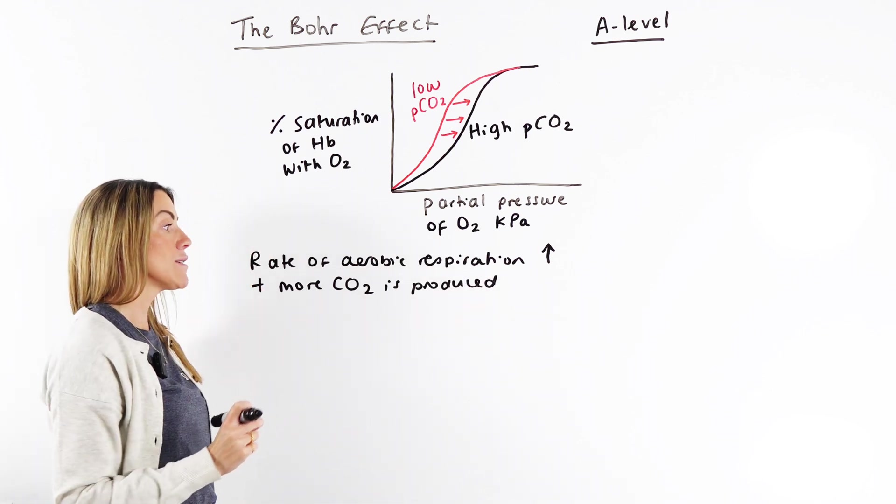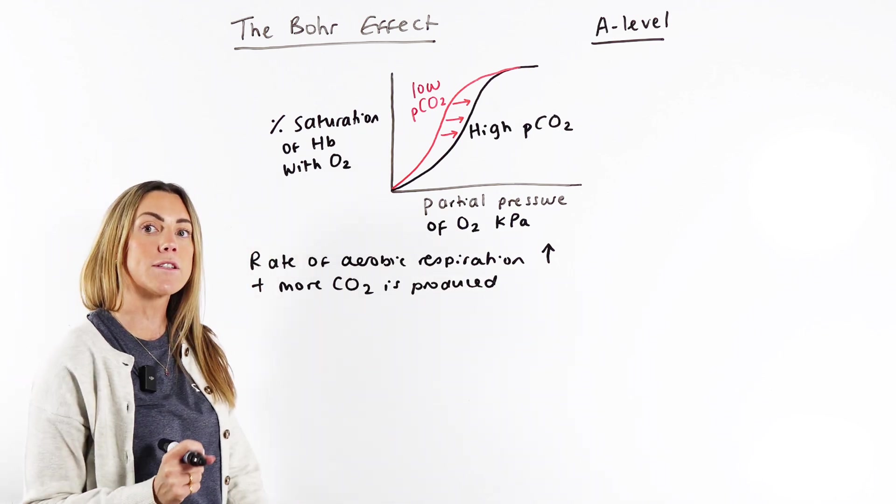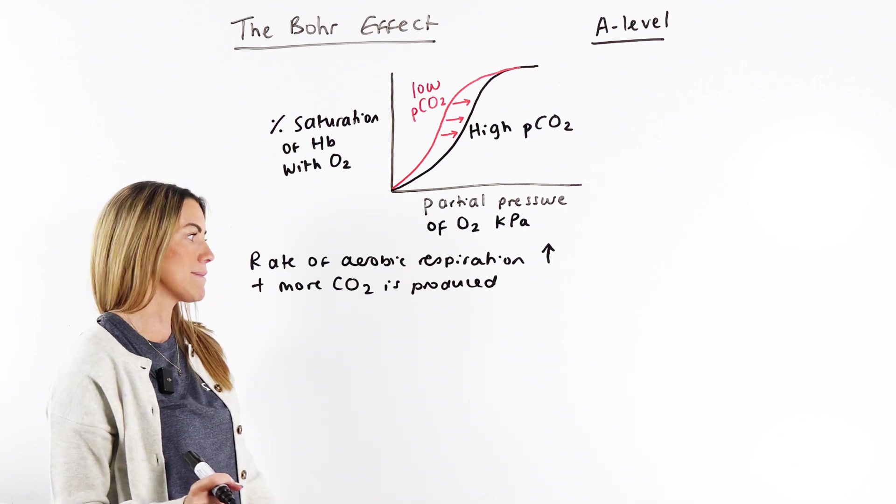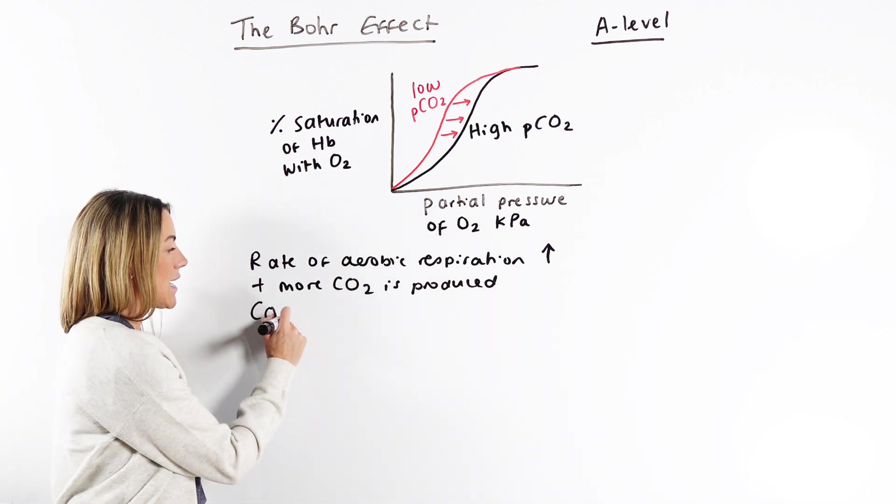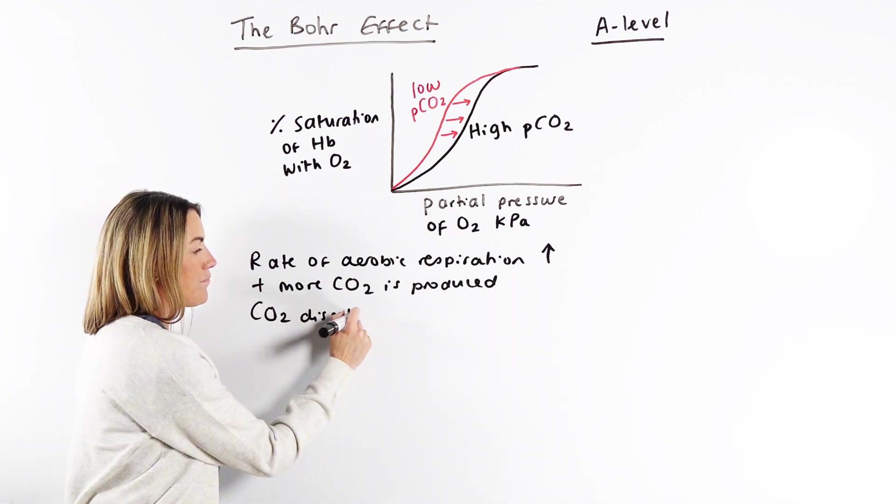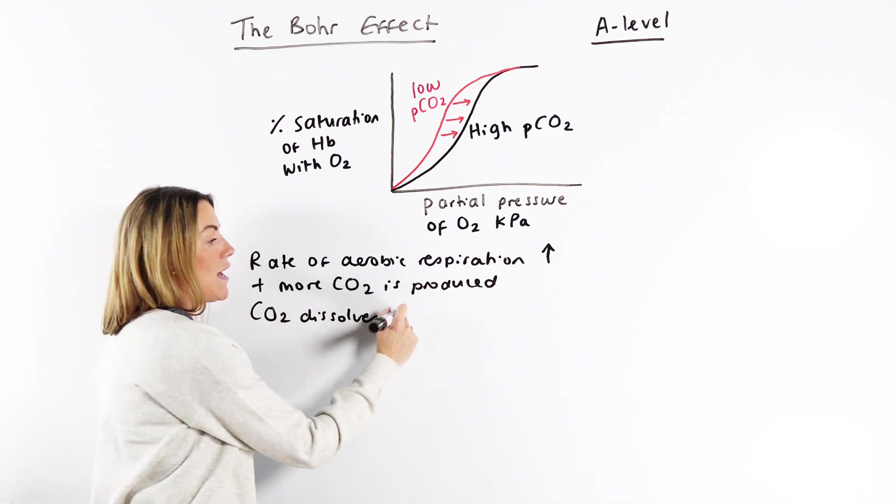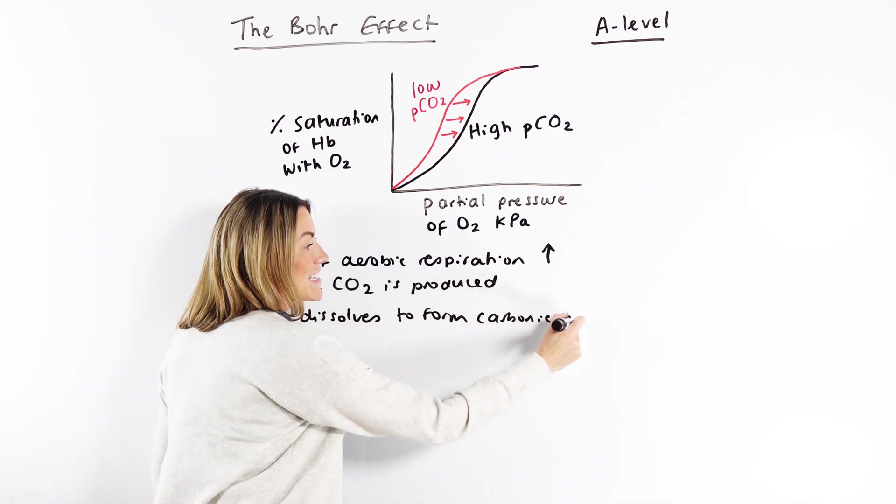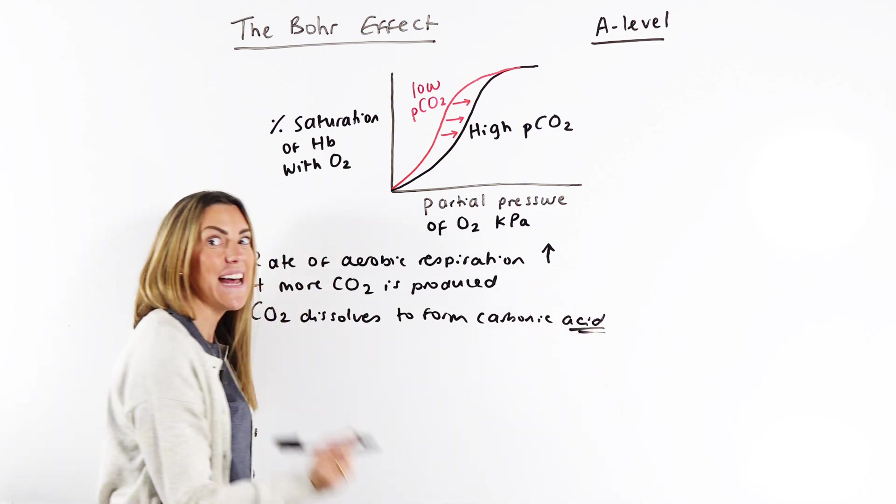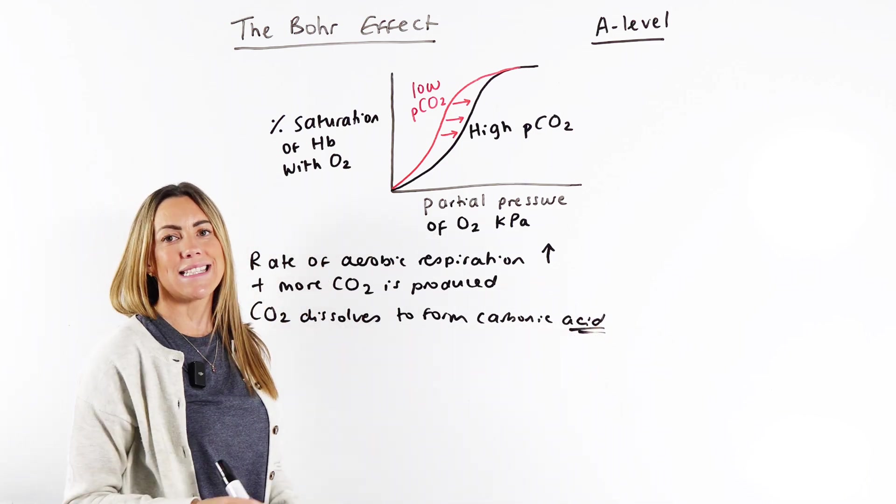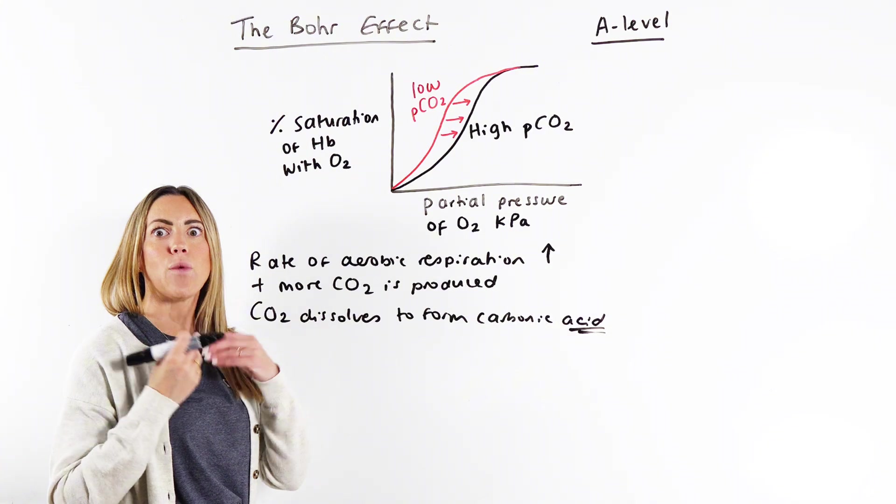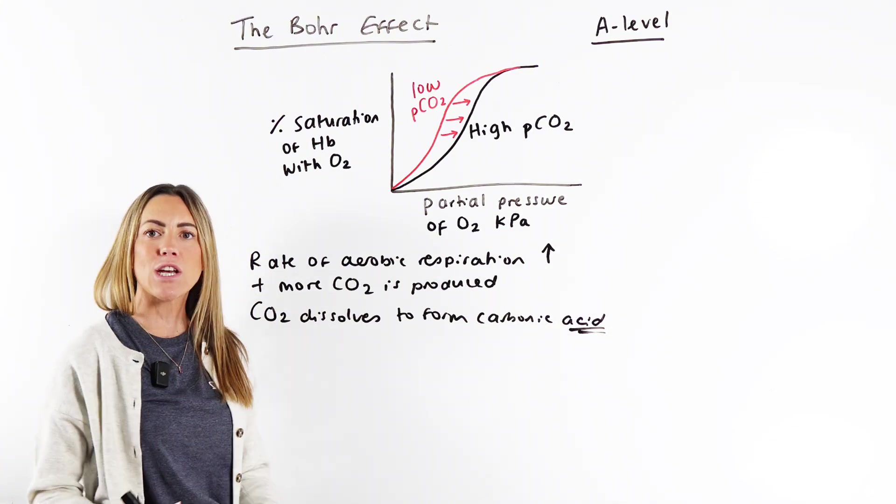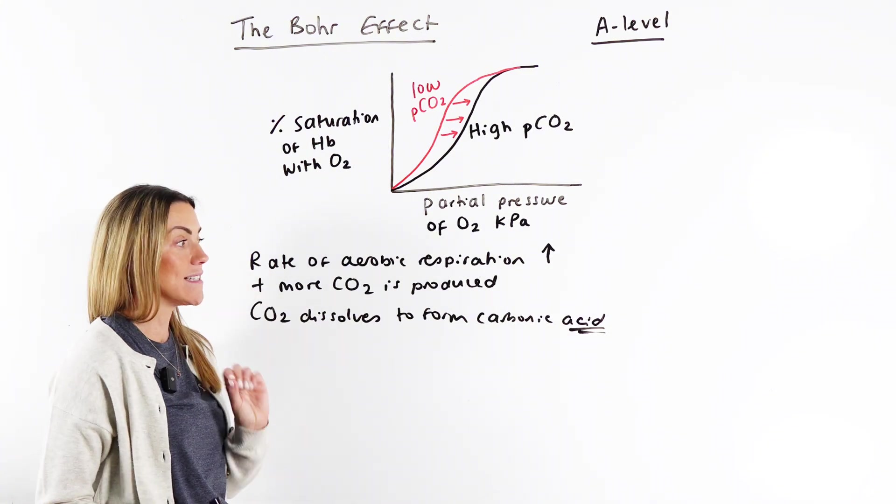Carbon dioxide will obviously diffuse from the muscle fibers into the blood plasma. Carbon dioxide dissolves in the blood plasma to form carbonic acid. That carbonic acid is then going to dissociate into hydrogen ions, and you're going to see an increase in the concentration of hydrogen ions.